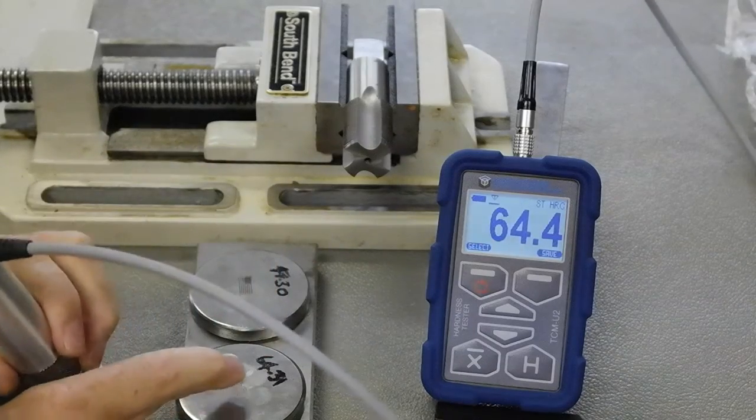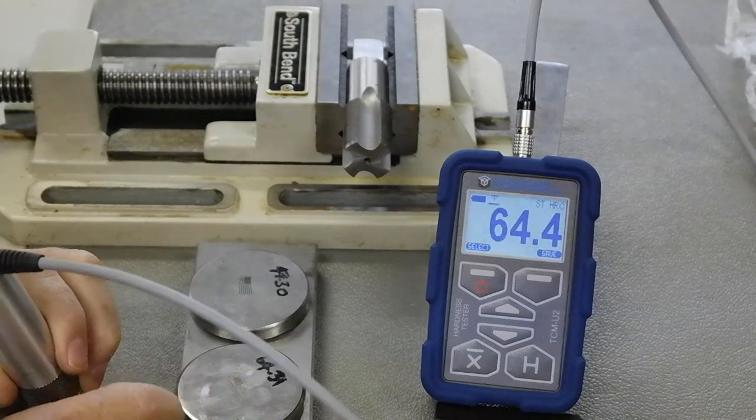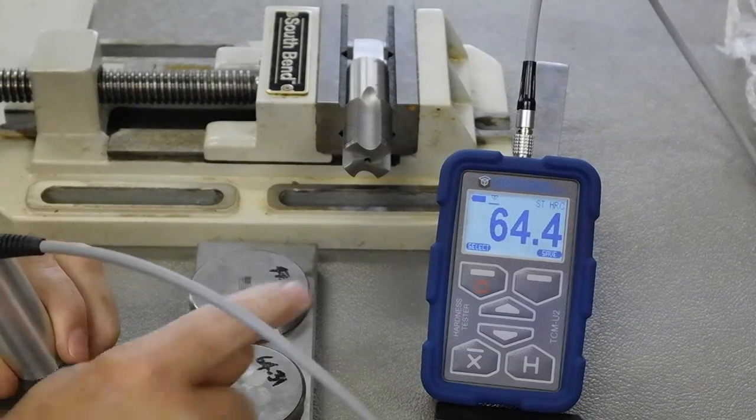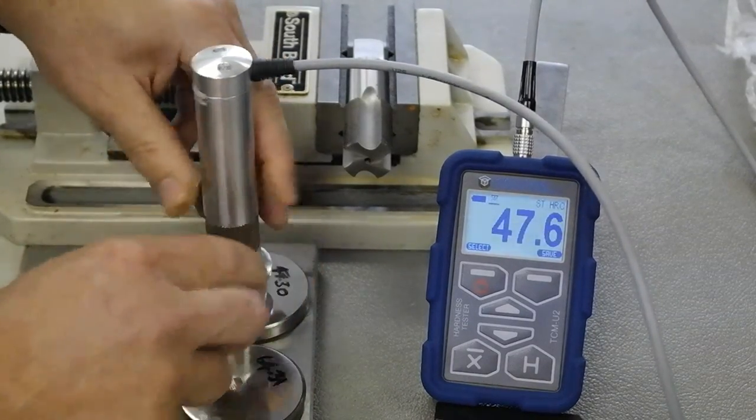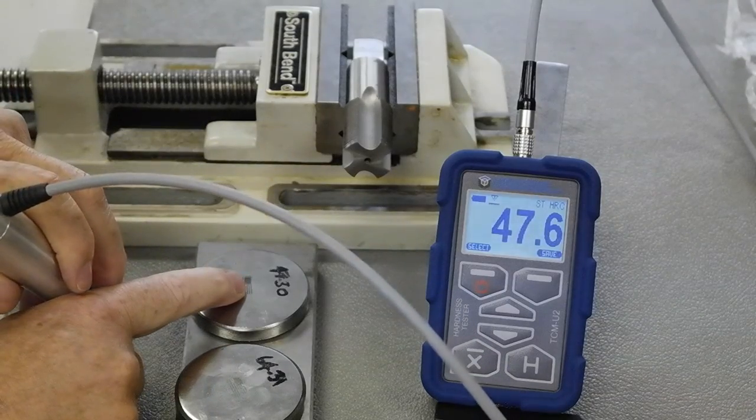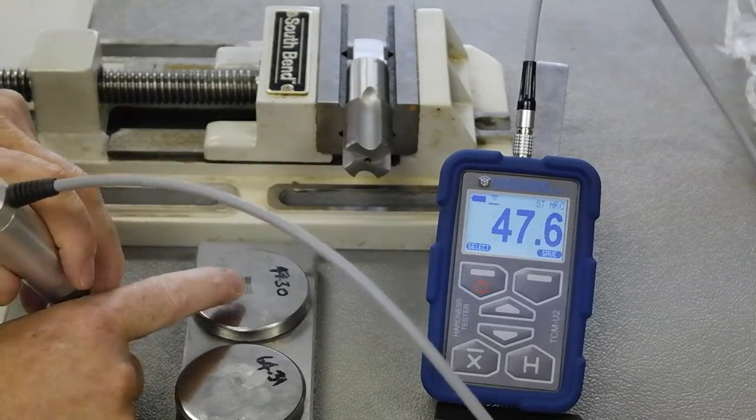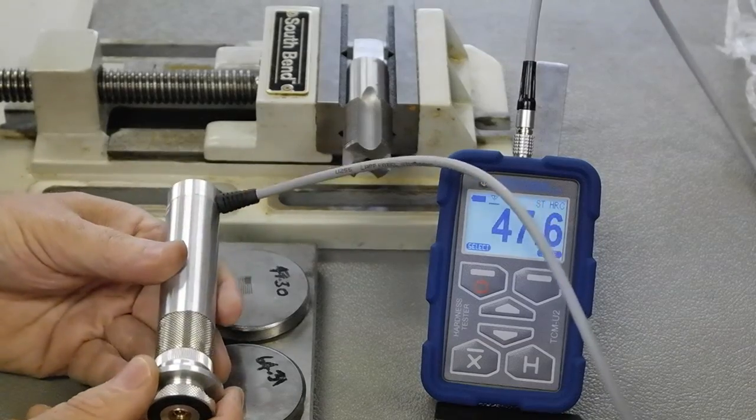So you can see here the test block is 64.3. Its tolerance is plus or minus 0.5. We're right on the money. Here we're going to do a test. 47.6 and the test block is 47.3. And I could keep on doing more tests of course.